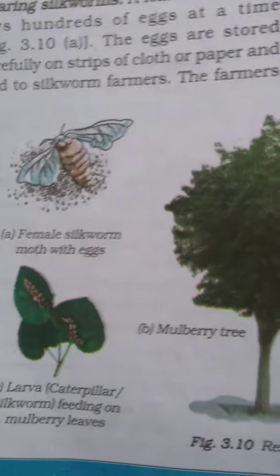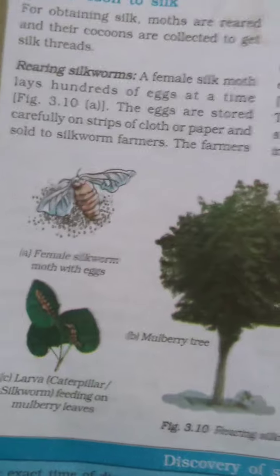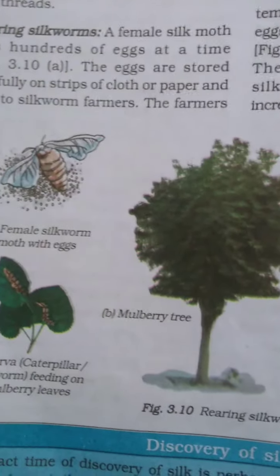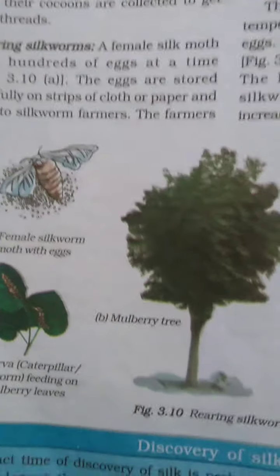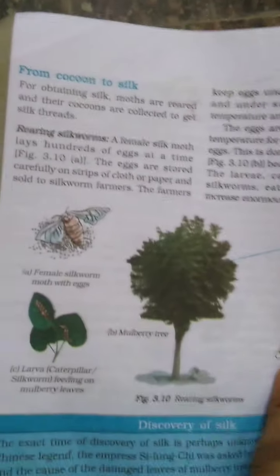Hi dear students, welcome back to my class. So in this class I am going to continue the remaining parts of the same chapter. What was the name of the chapter? Fiber to fabric. This is the third chapter from your science reader which we were discussing. Now let us continue and move on with the next topic of the chapter: from cocoon to silk.